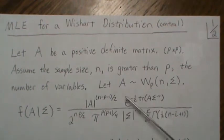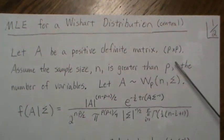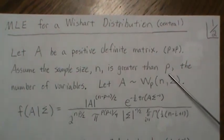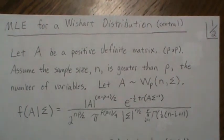So let's let A be a positive definite matrix, P by P. Assume the sample size n is greater than P, and P is also the number of variables.